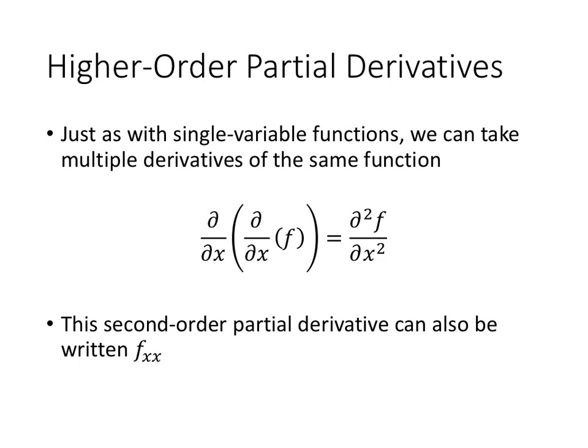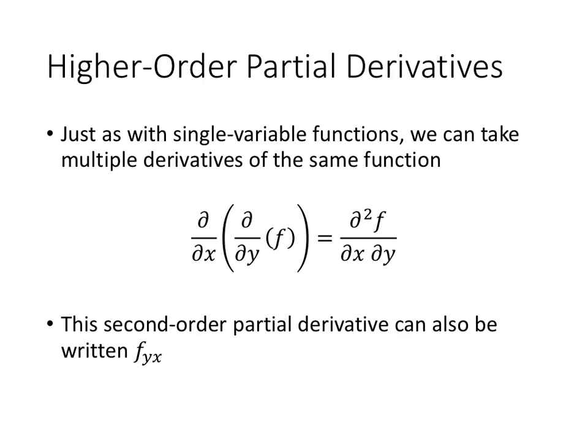Taking an analogy from single variable calculus, we can take multiple derivatives of the same function. If we take the partial derivative of f with respect to x and then take the partial derivative of that with respect to x again, we get a second-order partial derivative, written as del squared f over del x squared, or f sub xx. Similarly, we can take the partial derivative of f with respect to y twice, giving us f sub yy. We can also take a mixed second-order partial derivative — taking the partial derivative with respect to y and then with respect to x, written as del squared f del x del y, or f sub yx. Or we can take that mixed partial in the other order: f sub xy.